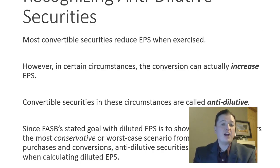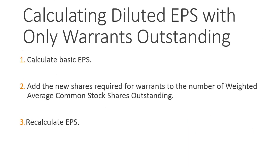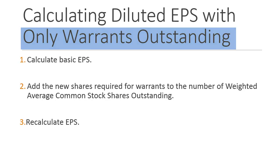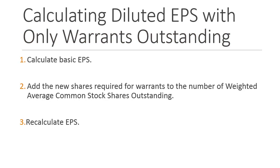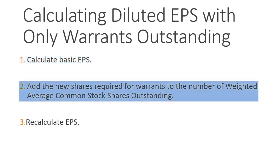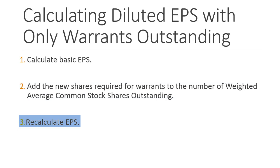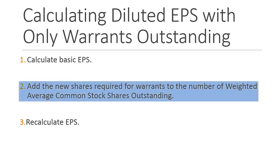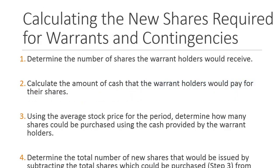Now that we've talked about dilutive securities and the basics, it's time to jump into our calculations. Let's start with the basic steps to calculating diluted earnings per share, beginning with the scenario involving only warrants or stock options. If we only have warrants and no convertible securities, there are just three steps: step one, figure out basic earnings per share; step two, figure out how many new shares we would have to issue to satisfy the stock option or warrant holders; and step three, using these new shares, recalculate earnings per share.